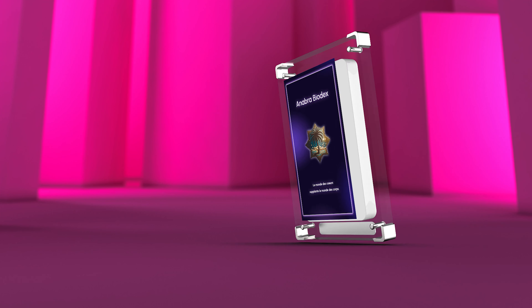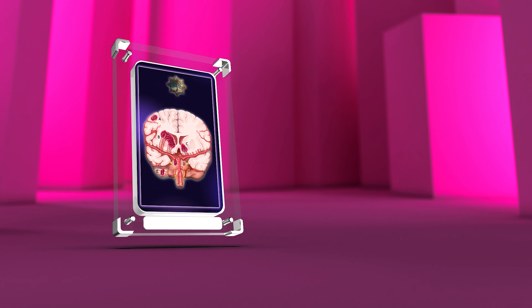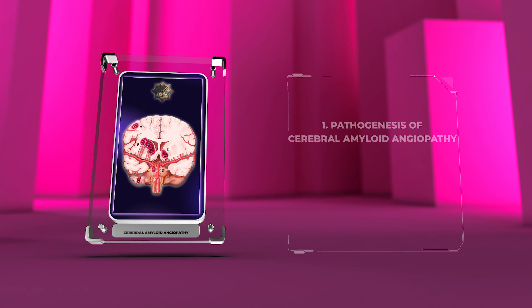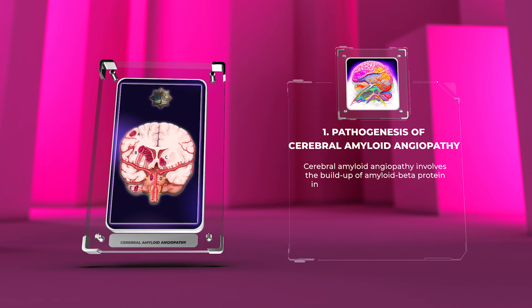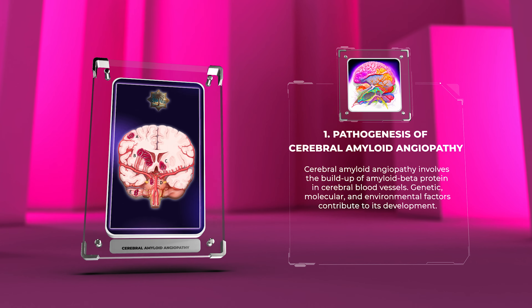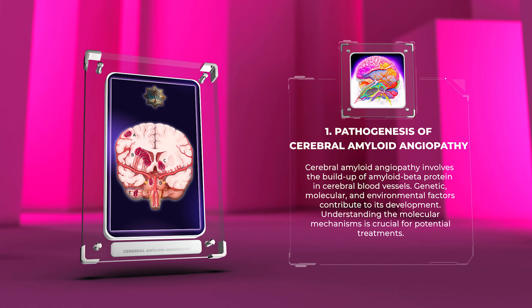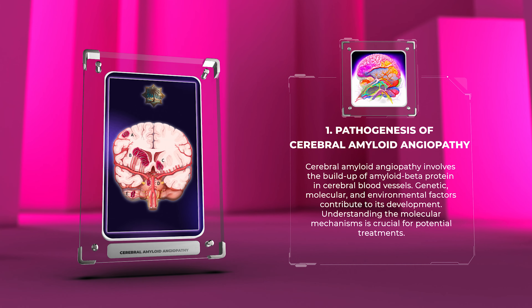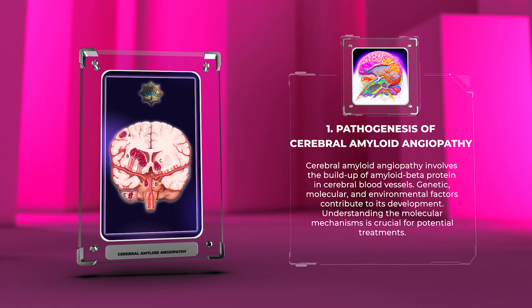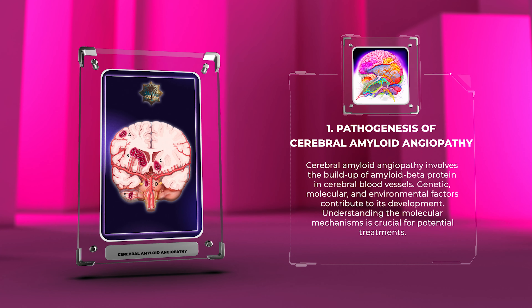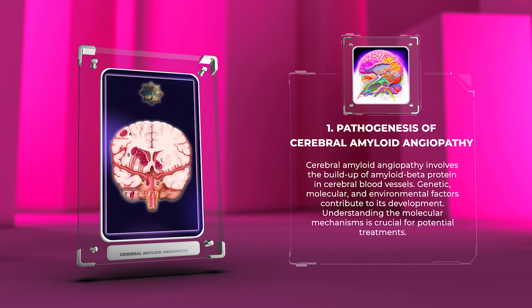Cerebral amyloid angiopathy involves the buildup of amyloid beta protein in cerebral blood vessels. Genetic, molecular, and environmental factors contribute to its development. Understanding the molecular mechanisms is crucial for potential treatments.